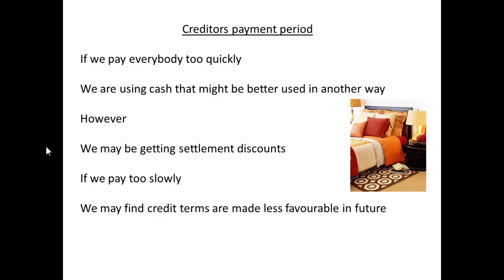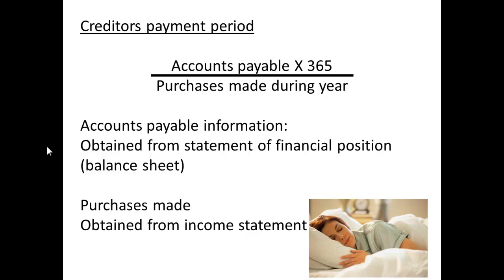Now let's look at the creditor payments — in other words, how we are paying people. If we pay everyone too quickly, we're using cash that could be used in some other way. However, there may be a reason for paying quickly, such as getting good value on settlement discounts. On the other hand, if we pay creditors too slowly, they might start offering us less favorable terms. The formula is: accounts payable times 365 divided by purchases made during the year. We get accounts payable from the statement of financial position and purchases from the income statement.